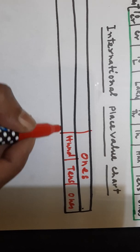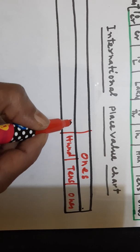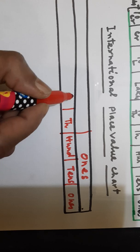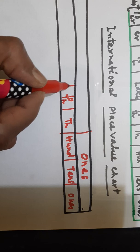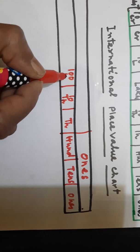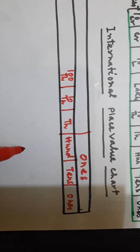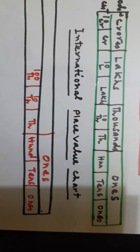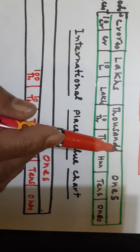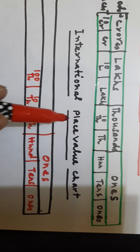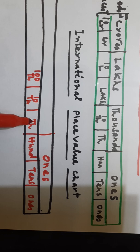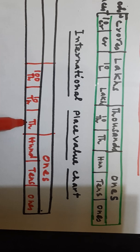After this comes thousands, then ten thousands, and then hundred thousands. Look at the difference: in the Indian system of numeration, the thousands period has two places — thousands and ten thousands. But in the international place value chart, the thousands period has three places: thousands, ten thousands, and hundred thousands.